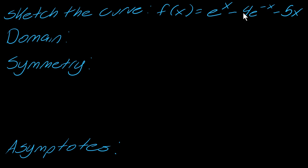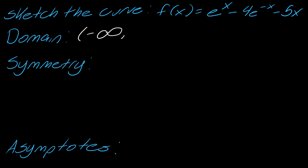Starting with the domain — I can put in any number I want for these x exponents, so this e to the x minus 4e to the negative x minus 5x. I can really put in any numbers that I want, so in this case I'm just going to note that my domain goes from negative infinity to infinity.